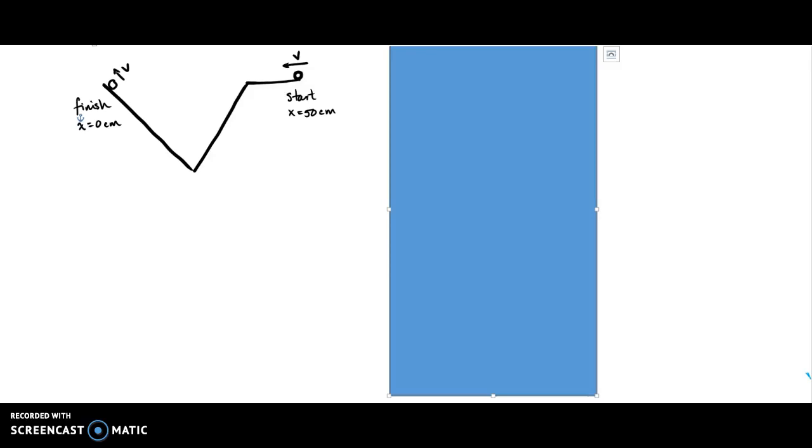All right, here's your challenge problem for the day. Let's see if we can look at the motion of this object on this ridiculous setup here and make that into not only a position time graph, but a velocity time graph, and then finally, also an acceleration time graph in no particular order.